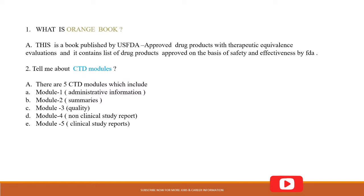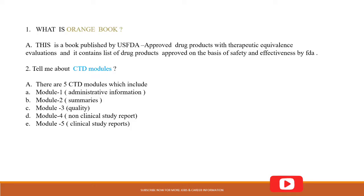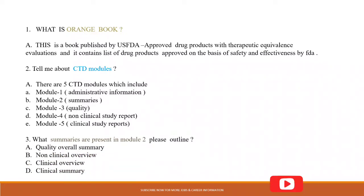You may also be asked: Tell me about the CTD modules. CTD means Common Technical Document, through which regulatory submissions are done. There are five CTD modules: Module 1 contains administrative information and is region-specific; Modules 2 through 5 are common for everyone. Module 2 contains summaries, Module 3 covers quality, Module 4 contains non-clinical study reports, and Module 5 contains clinical study reports.